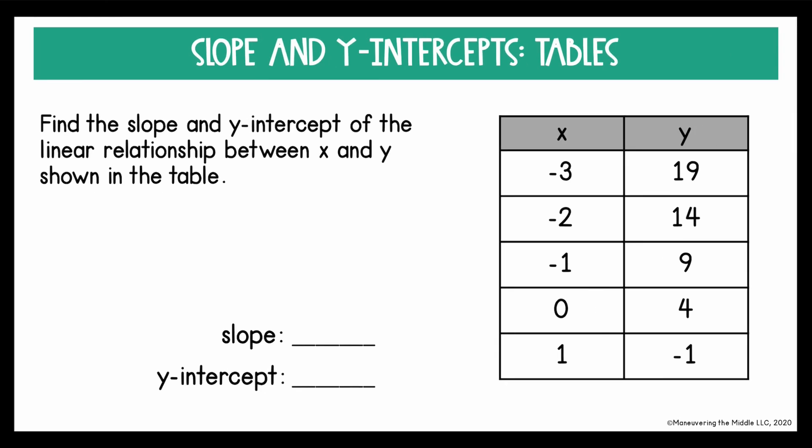Now let's find slope and y-intercept from a linear relationship shown in a table. So starting with slope, I need to use my slope formula, y2 minus y1 over x2 minus x1. I can choose any two ordered pairs from the table. I'll just go with the first two. So I'm going to write them out as negative 3, 19 and negative 2, 14.